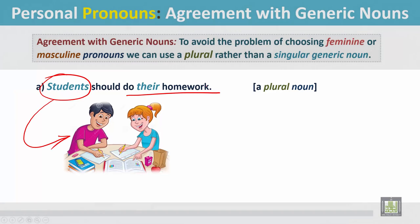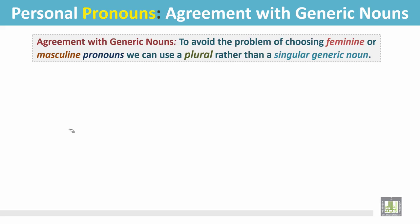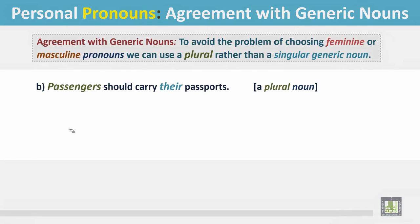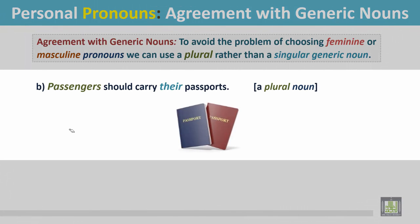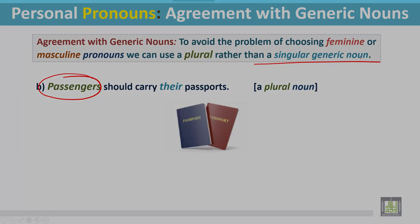Example B: 'Passengers should carry their passport.' In this sentence, 'passengers' is a plural noun. We did not use a singular generic noun here.